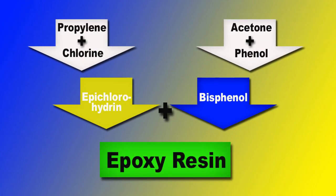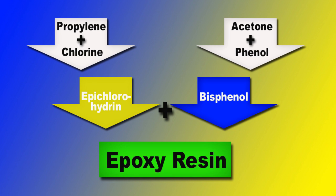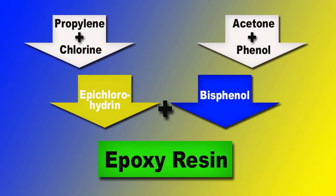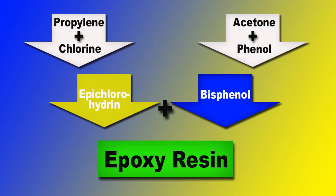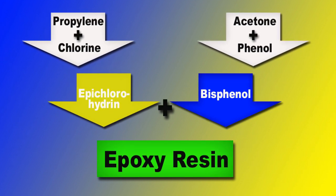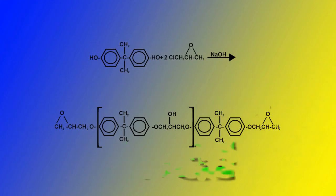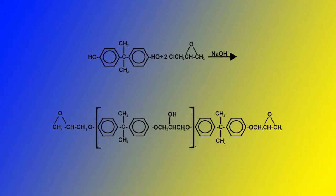As you can see, propylene and chlorine are combined to form epichlorohydrin. The resin and acetone and phenol are combined to form the hardener bisphenol A. Epichlorohydrin and bisphenol are the two liquids that you mix together to form your epoxy bond. The chemical formula for the final reaction is this.